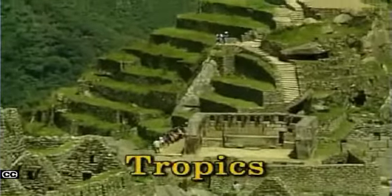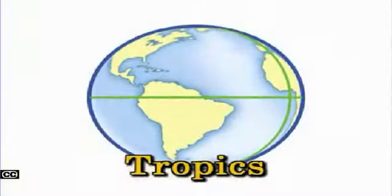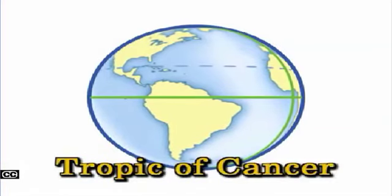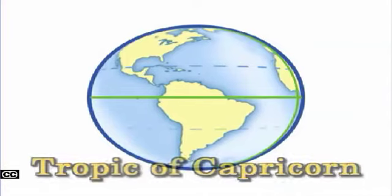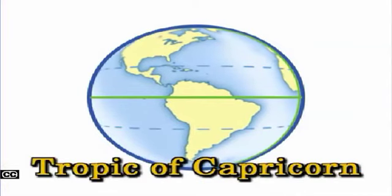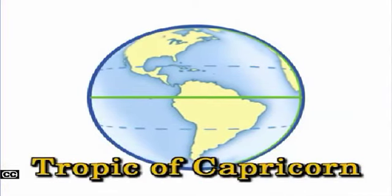The region of Earth with some of the warmest climates is called the tropics. The tropics extend from the Tropic of Cancer, the northernmost point where the sun shines directly overhead, to the Tropic of Capricorn, the southernmost point where the sun shines directly overhead.